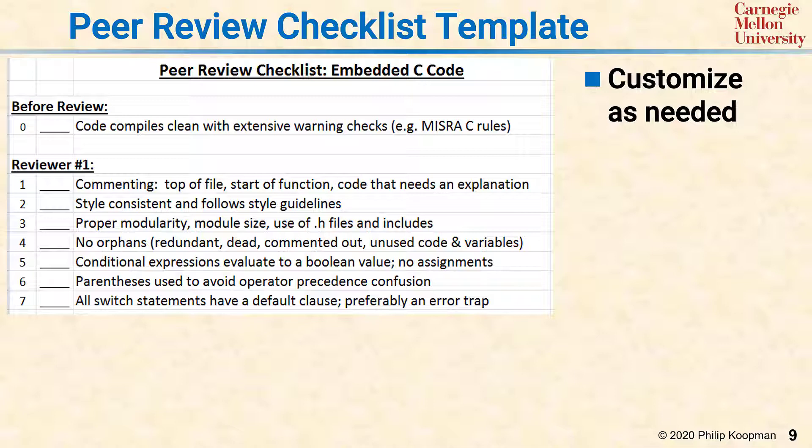During the review, reviewer number one looks at a few lines of code at a time, and for each set of lines considers the following items. Going down the list: are the comments appropriate? Is the style consistent and in keeping with the style guidelines? Is there proper modularity? Are there no orphan code segments? Are there improper use of conditional expressions? Are parentheses used properly to avoid ambiguity and operator precedence? And are the switch statements structured properly?